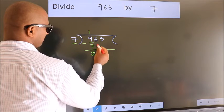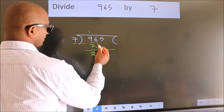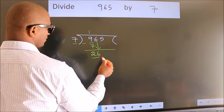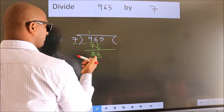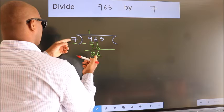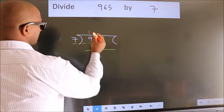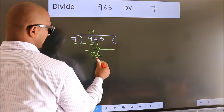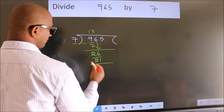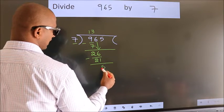After this, bring down the beside number. So 6 down. So 26. A number close to 26 in 7 table is 7 threes, 21. Now we subtract. We get 5.